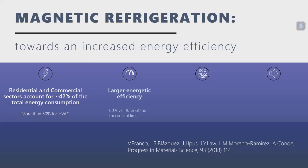Magnetocalorics is a good candidate to make that improvement. Around 42 percent of total energy consumed is used in residential and commercial sectors, and about half of that is used for heating, ventilation, and air conditioning. So if we can make more efficient temperature control devices, we will be able to make a real impact on society.